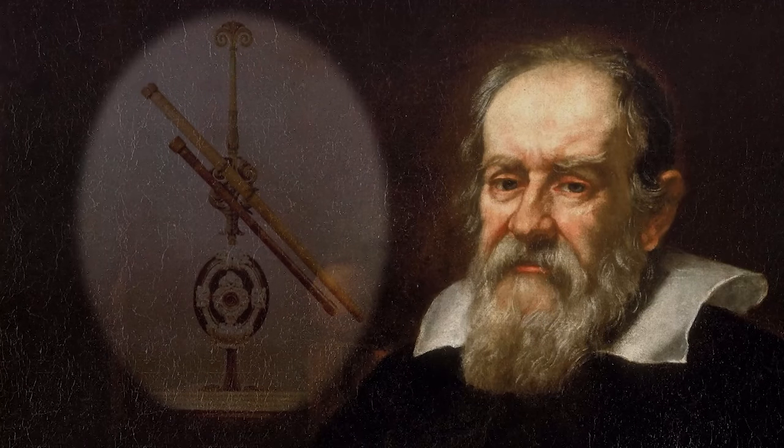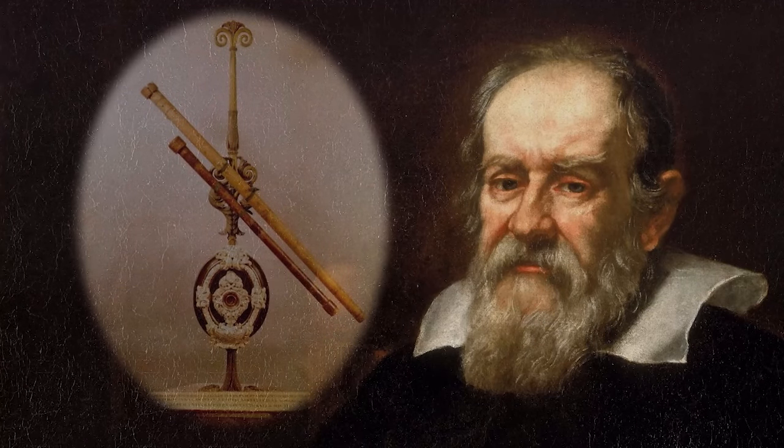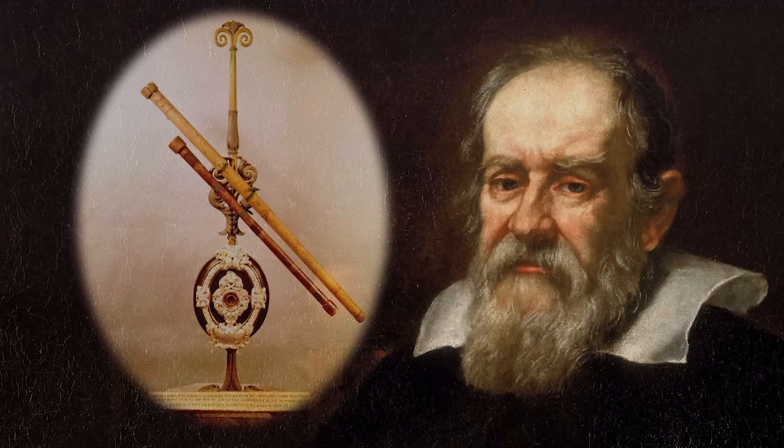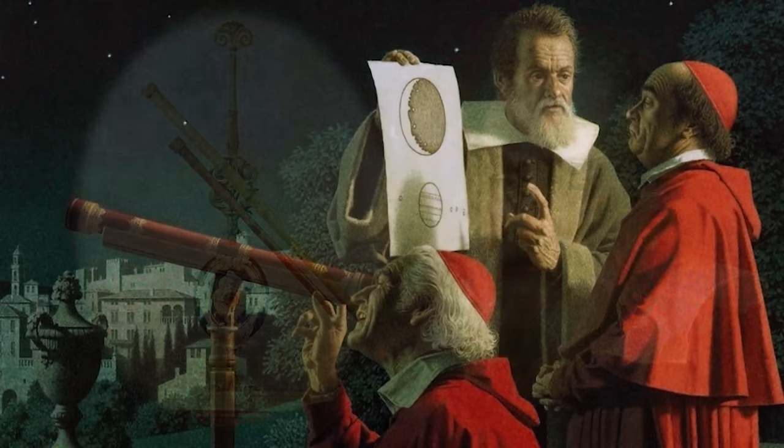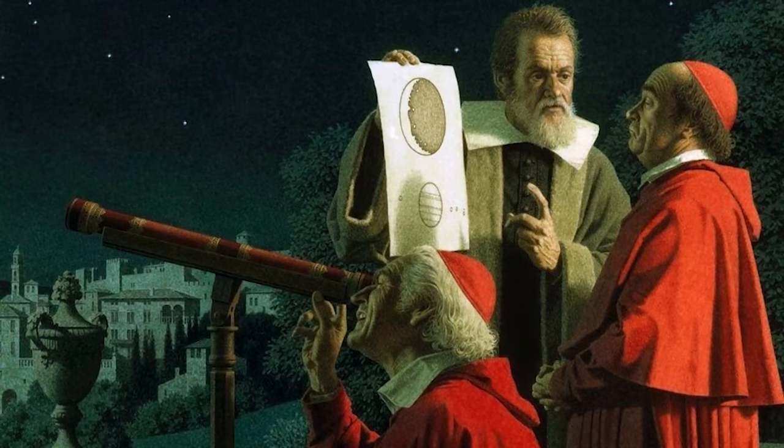In 1609, Galileo built an early telescope and soon turned it to the night sky. The telescope was a powerful tool that led to a complete re-evaluation of the Earth's place in the universe.